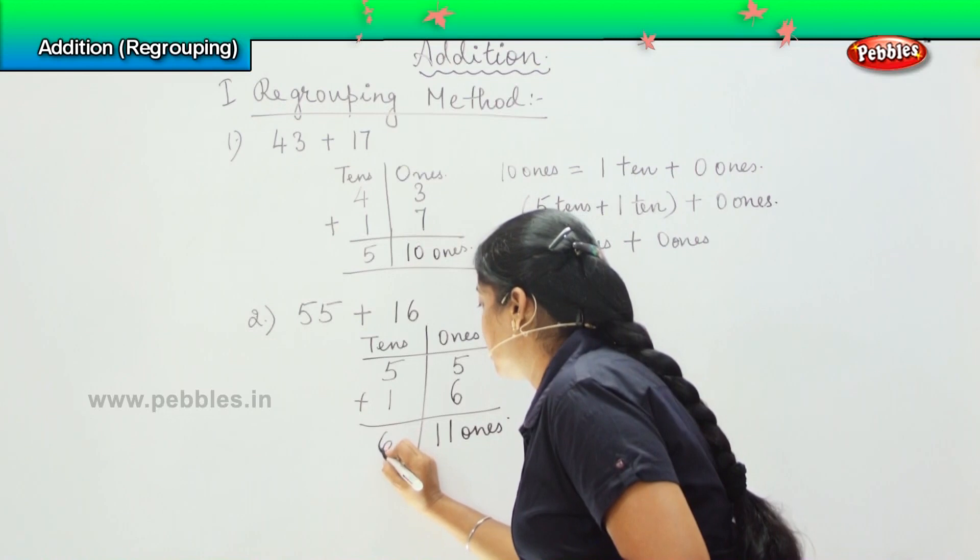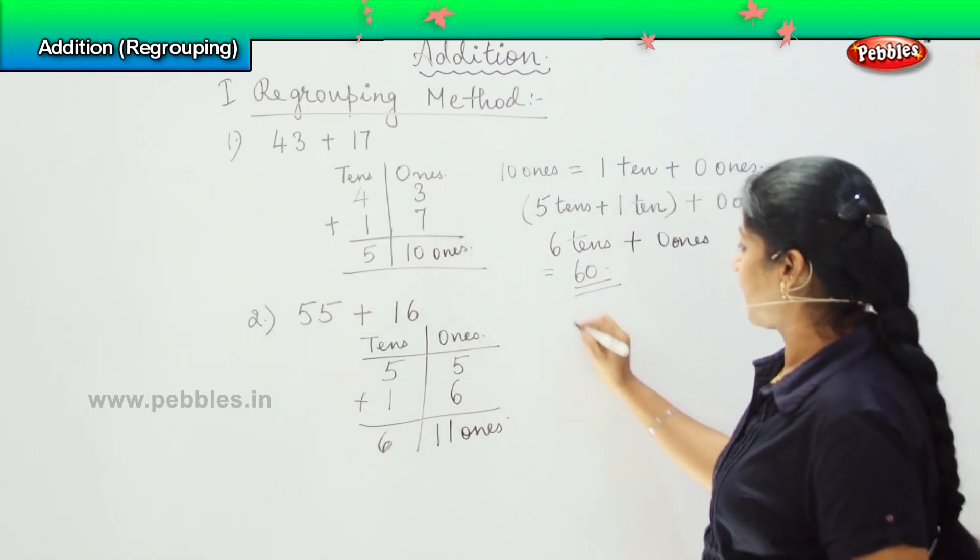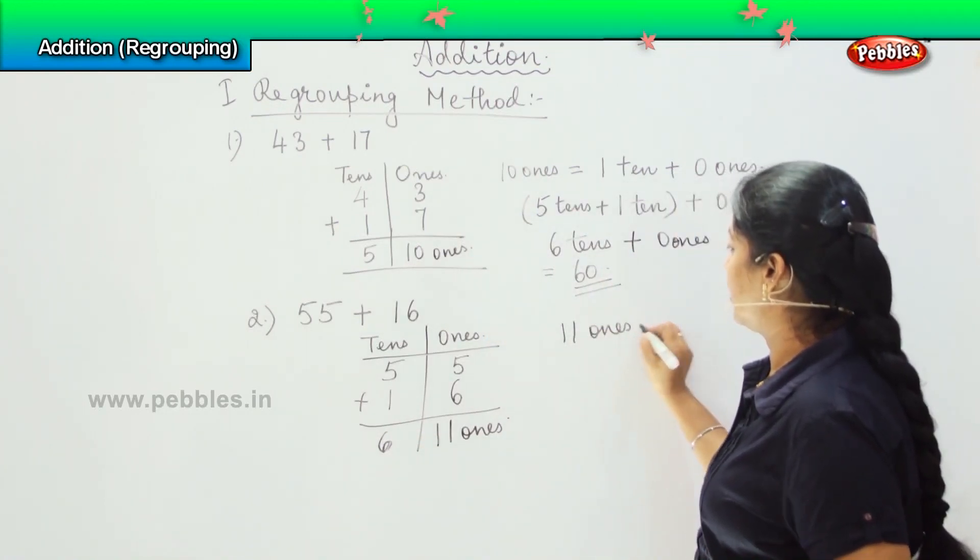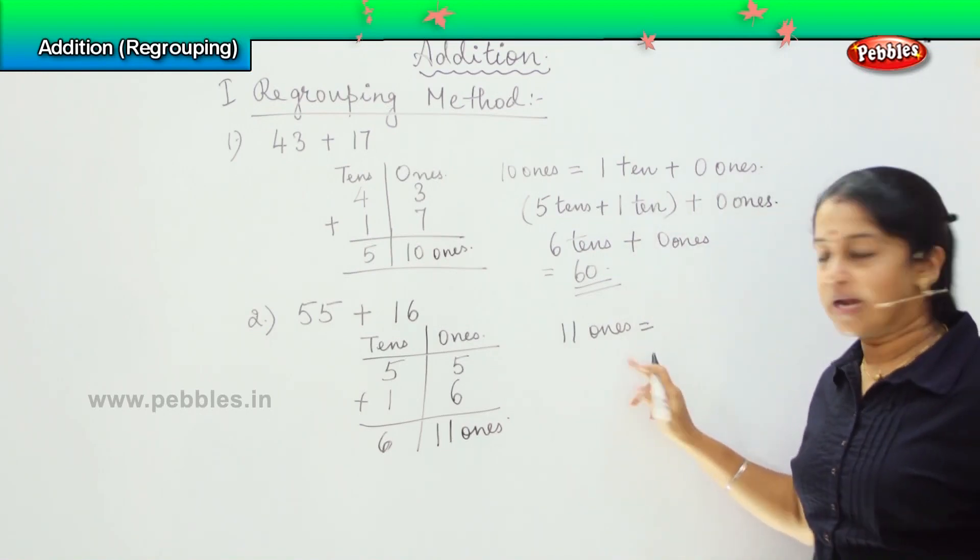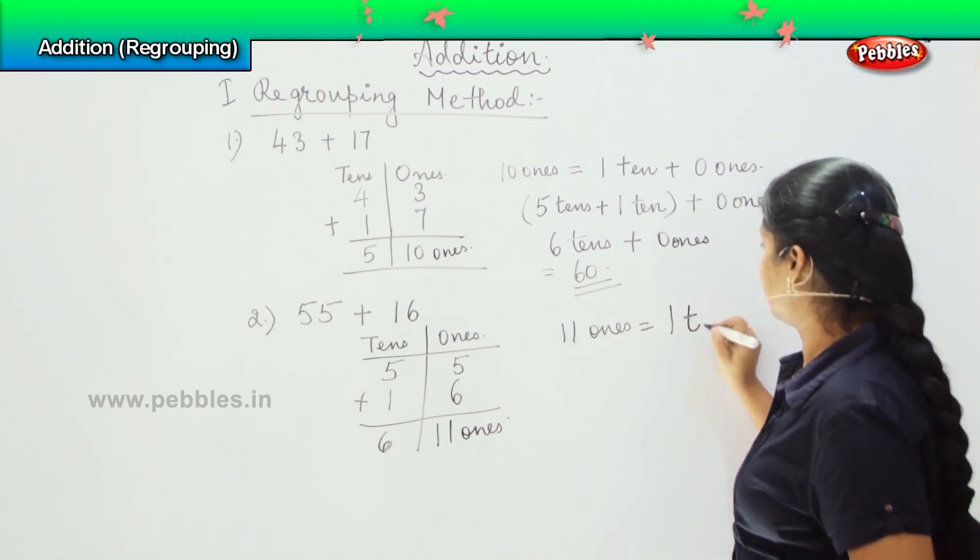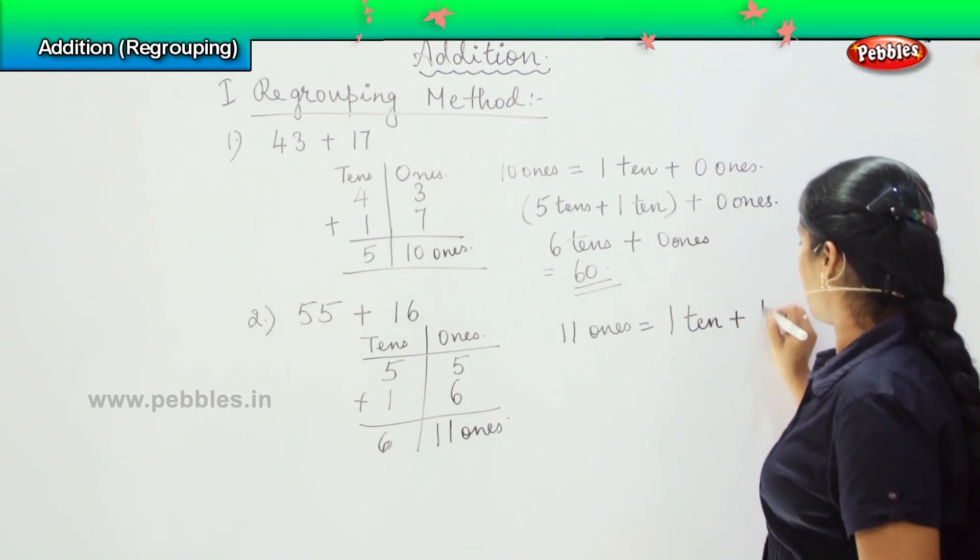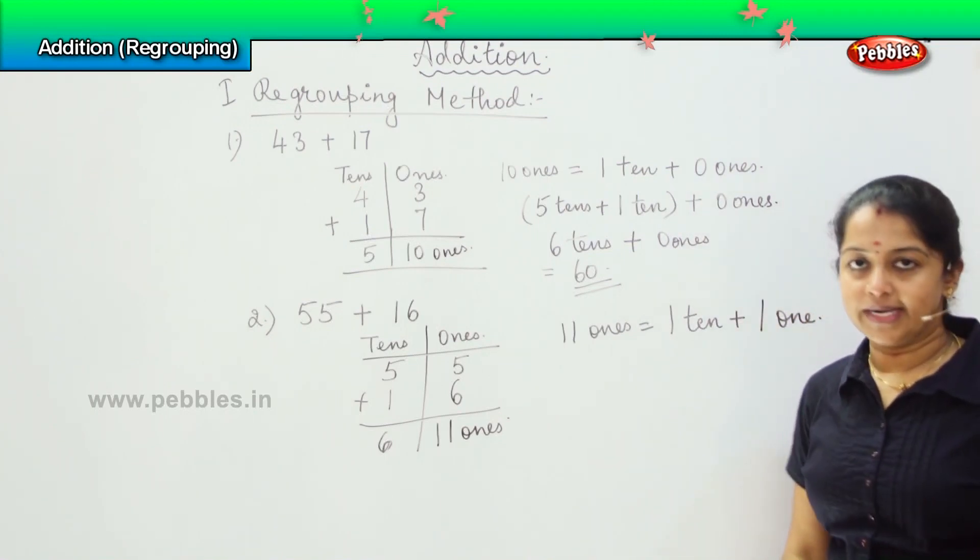So now 11 ones. How can you split it? How can you regroup it? 11 ones can be written as 1 ten plus 1 one.